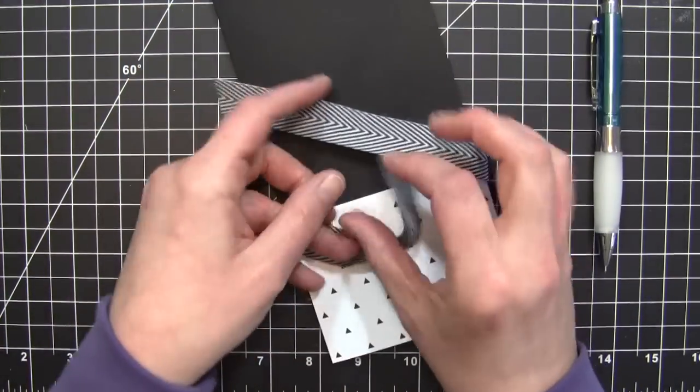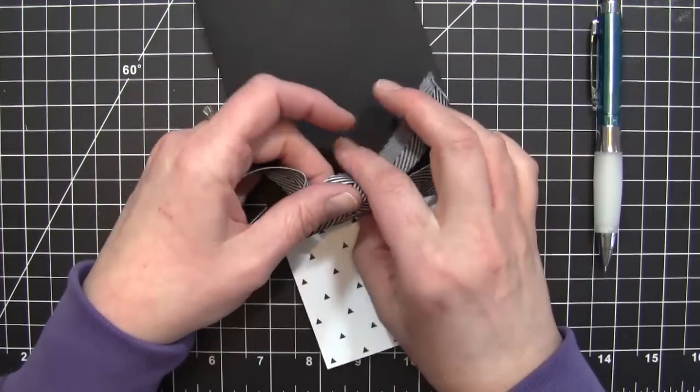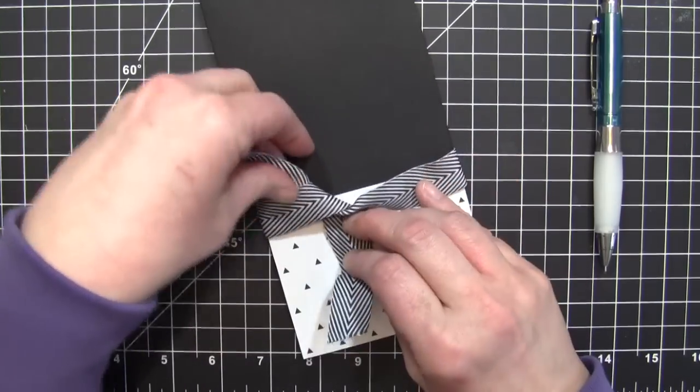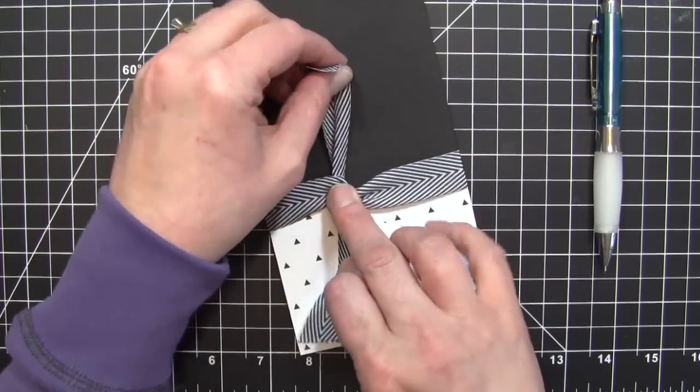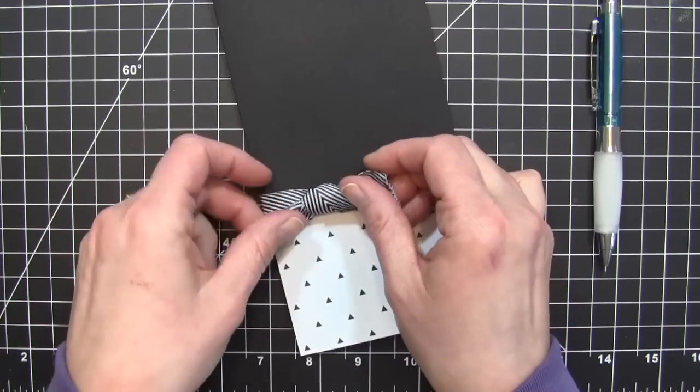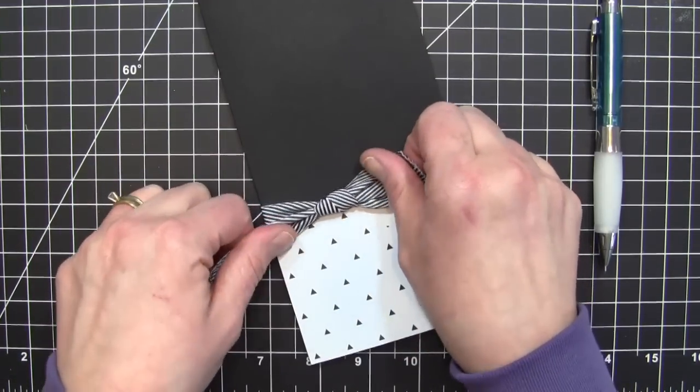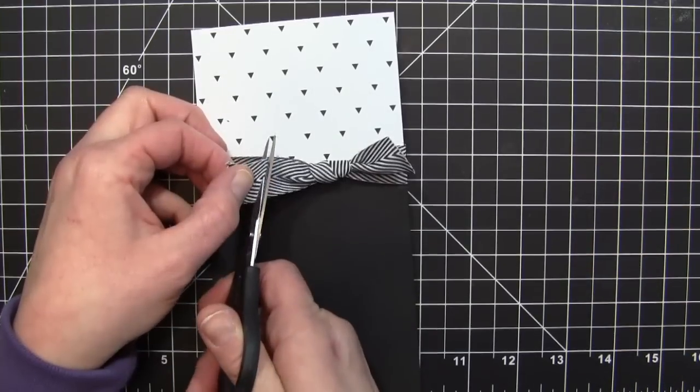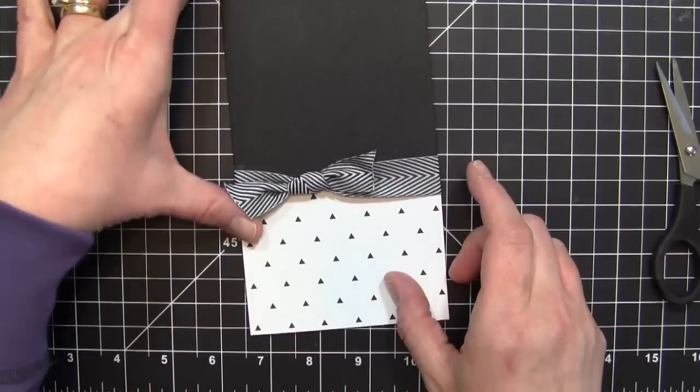I really love this chevron ribbon, it's so pretty and there's so many different colors you can get, but the black is probably one of my favorite colors. Once I have that knotted, I'm using scissors to trim off my ends and then I'm ready to start putting my card together.